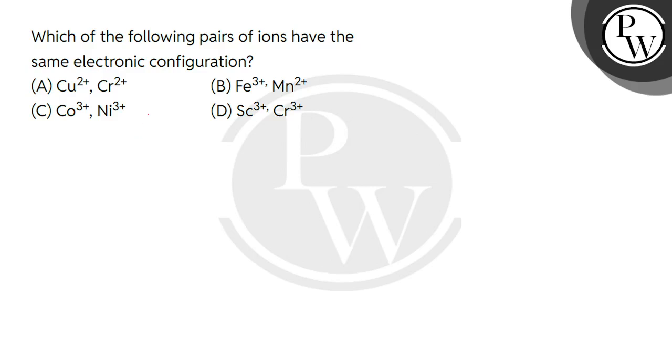Hello students, let's see this question. The question says which of the following pairs of ions have the same electronic configuration? Four options are given. You have to see which option has the same electronic configuration. So first let's see this option.